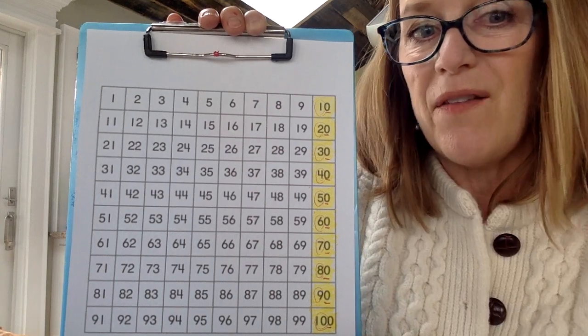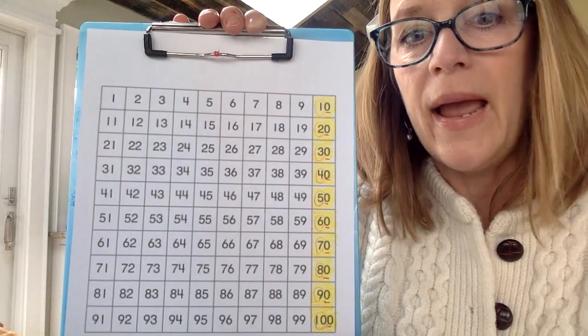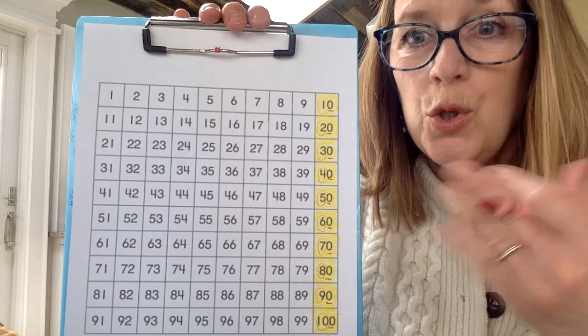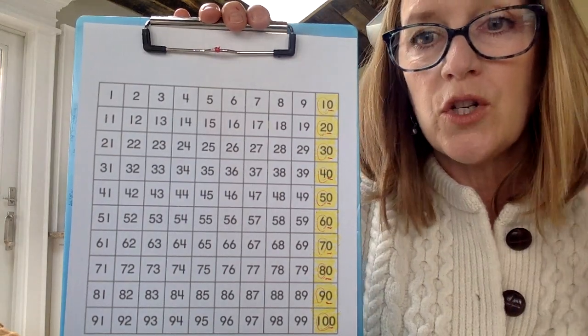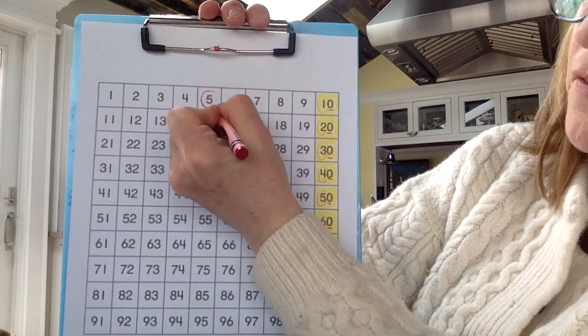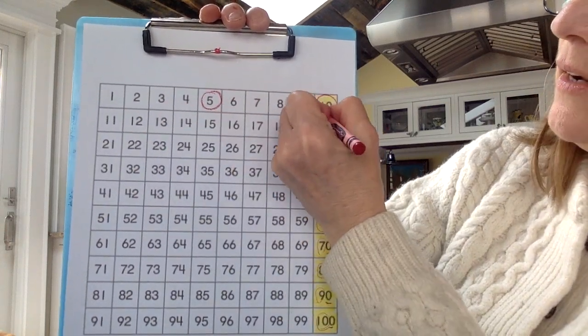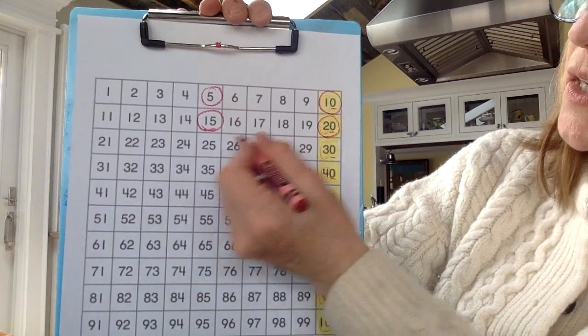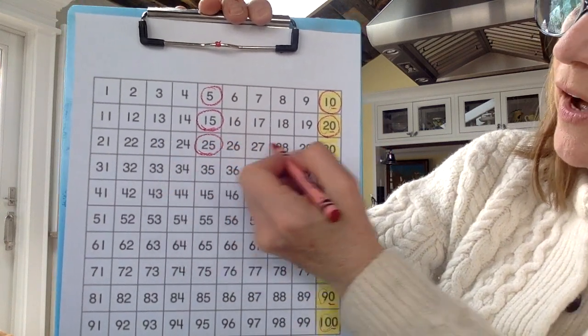Now we're going to take a look at counting by fives. And this may not be as familiar to you so I'm going to count it. You join with me. And we're just going to circle those numbers. Five, ten, fifteen, twenty, twenty-five.